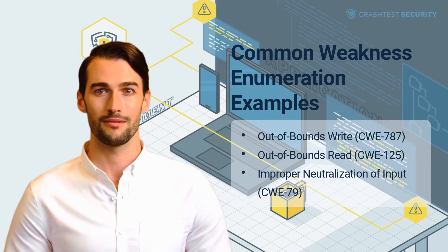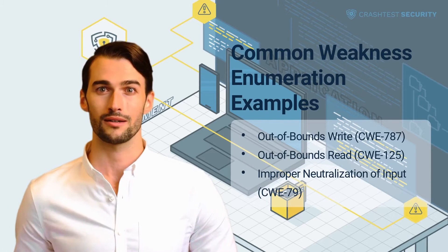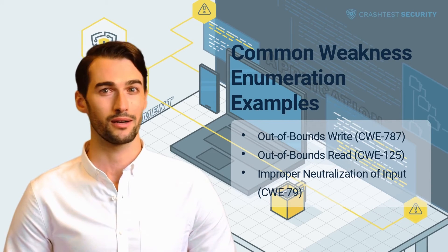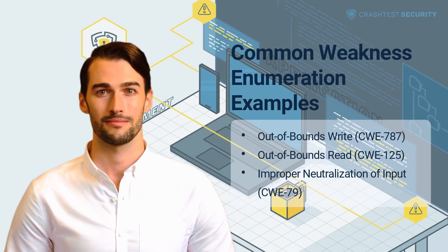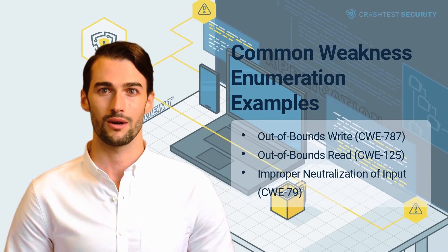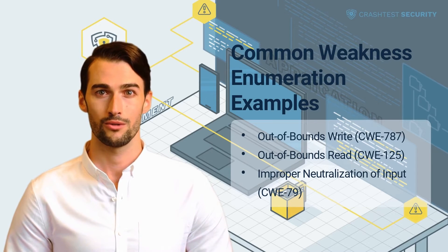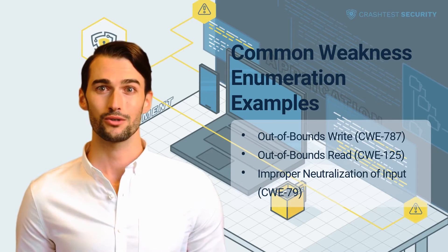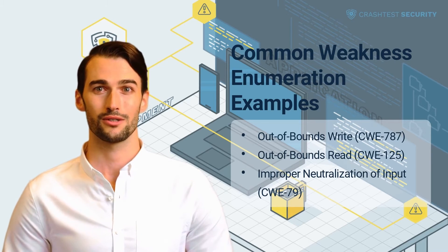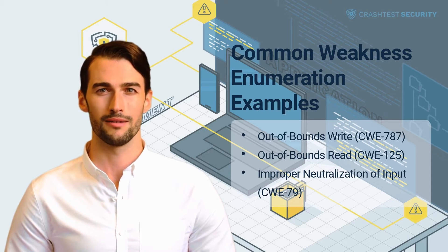The out-of-bounds write vulnerability is highly likely to be exploited, with a national vulnerability database count of 3033. The severity of an attack is also high, with an average common vulnerability scoring system score of 8.22 and an overall security score of 65.93.